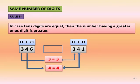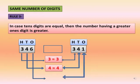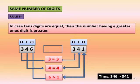In 346 the digit at ones place is 6, and in 341 the digit at ones place is 1. As 6 is greater than 1, the number 346 is greater than 341. So we will put the open side of the sign towards 346.